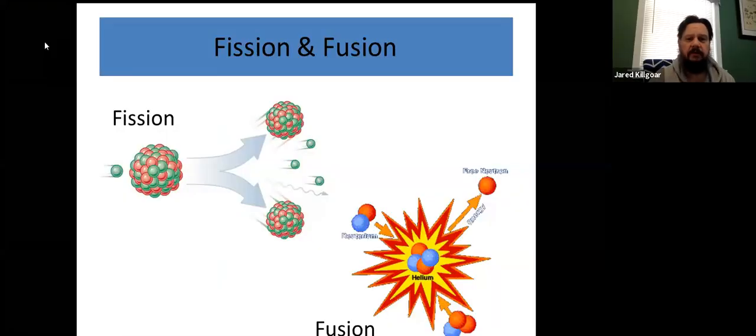So today we're going to discuss a couple more types of nuclear reactions, specifically fission and fusion. So here's a graphic design of what fission is. Fission is when you have a large nucleus breaks down into two smaller nuclei.